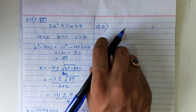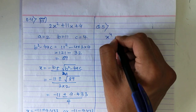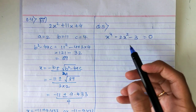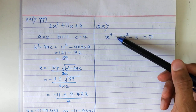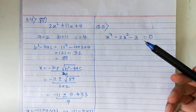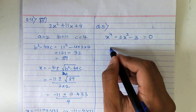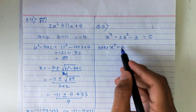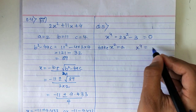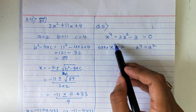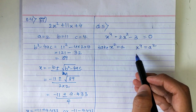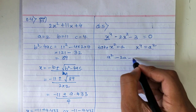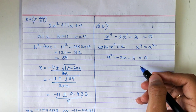Question number 5: we have x to the power 4 minus 2x squared minus 3. The easiest way to handle this is to take x squared as y. If x squared is y, then x to the power 4 will be y squared.